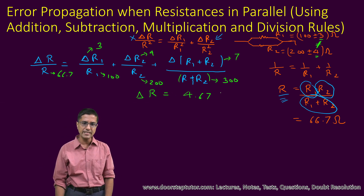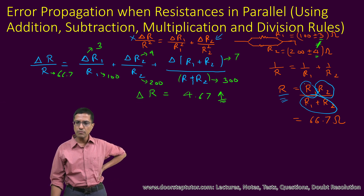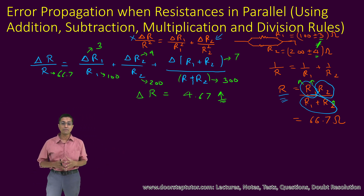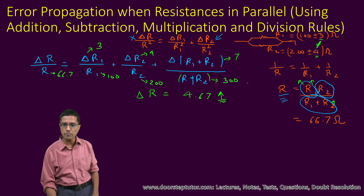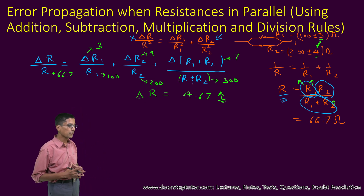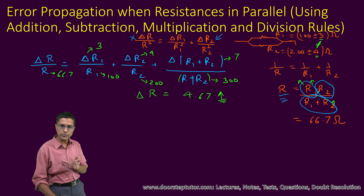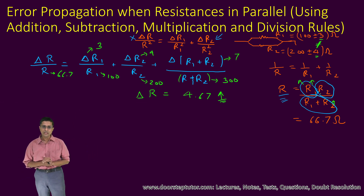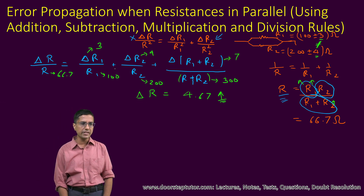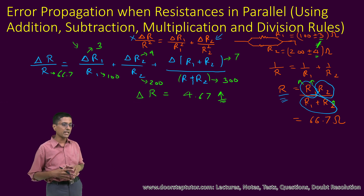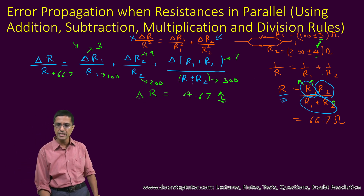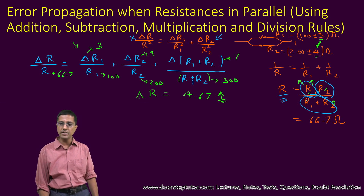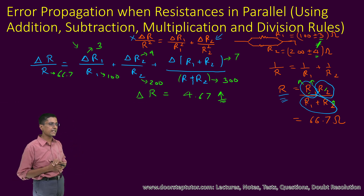Look at the formula again. If R1 increases, R1 + R2 in the denominator also increases. So the increase in R1 in the numerator is partially compensated by its appearance in the denominator R1 + R2. Similarly, the increase in R2 is also compensated. We have not taken this compensation into account. When quantities like R1 and R2 appear repeatedly — both in the numerator and denominator — using standard addition, division, and multiplication formulas always gives an overestimate.